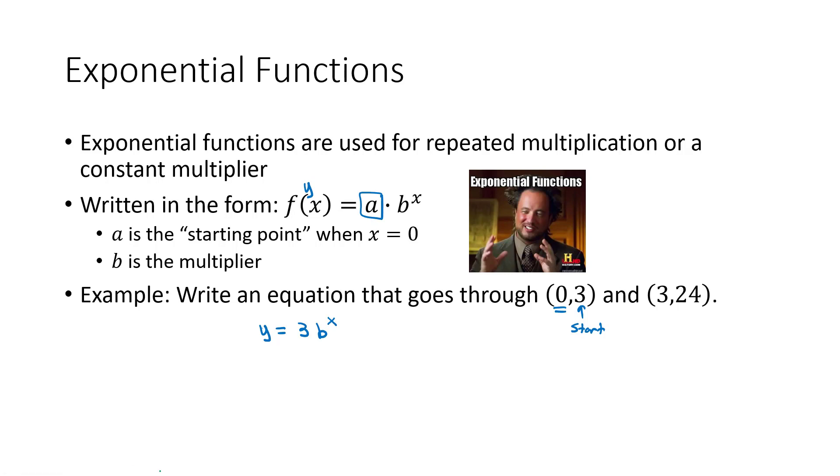In order to figure out what b is, what my multiplier is, we can use the other point, where 3 is the x and 24 is the y. So we're replacing the y with 24 equals 3b to the x power, and so we're going to plug a 3 into that. And if we divide both sides by 3, we get b cubed equals 8. And what to the third power is equal to 8? What times itself 3 times? Well, 2 times 2 times 2 is equal to 8.